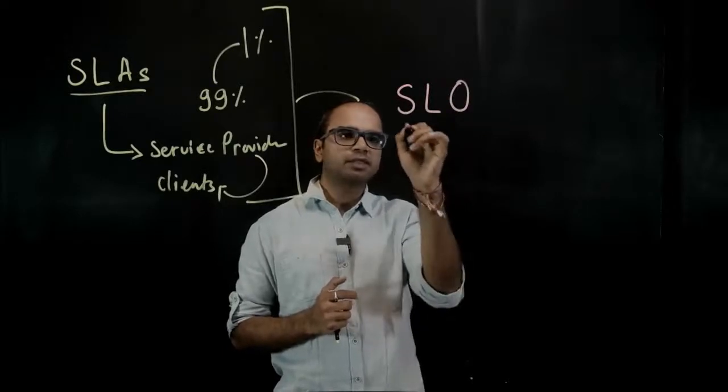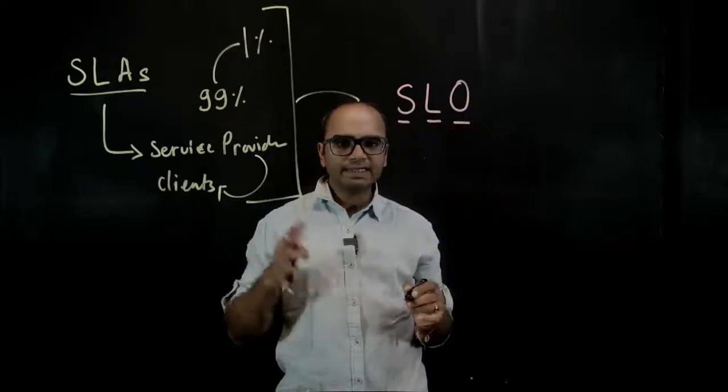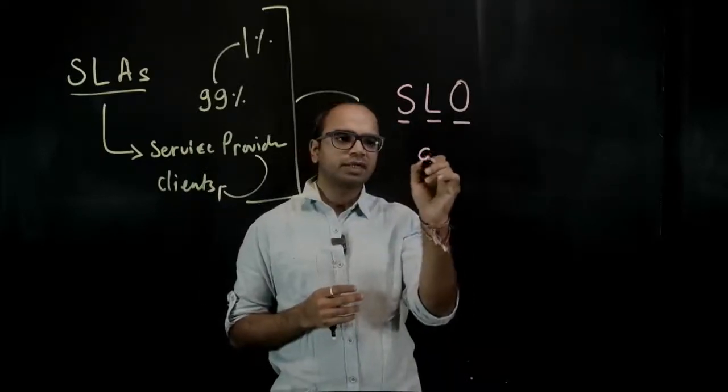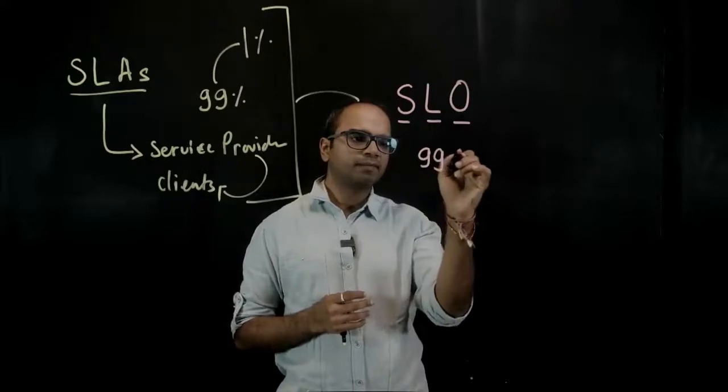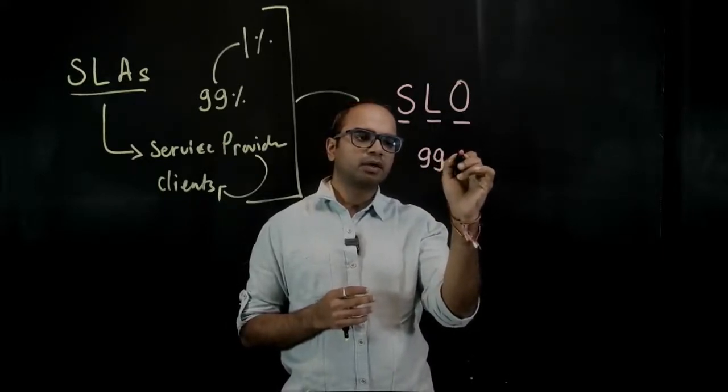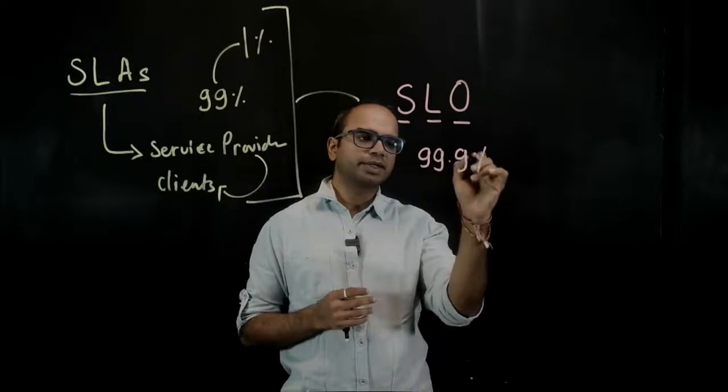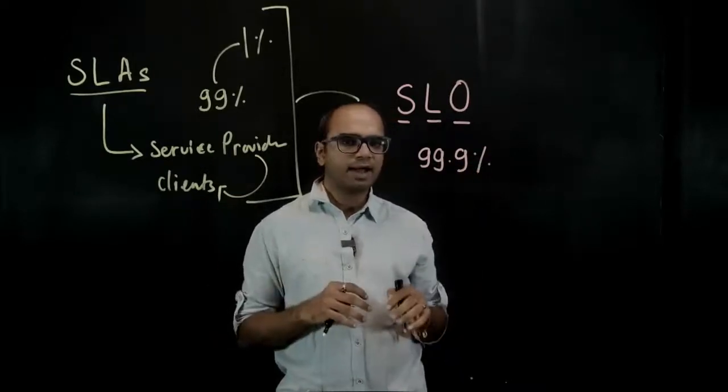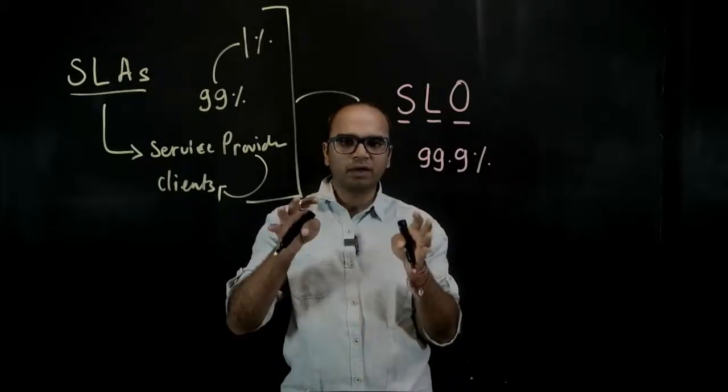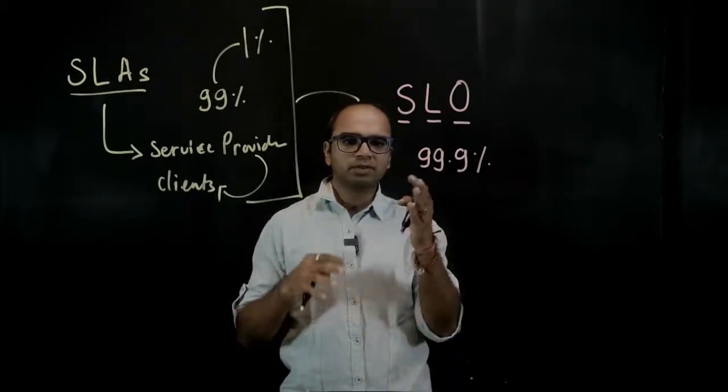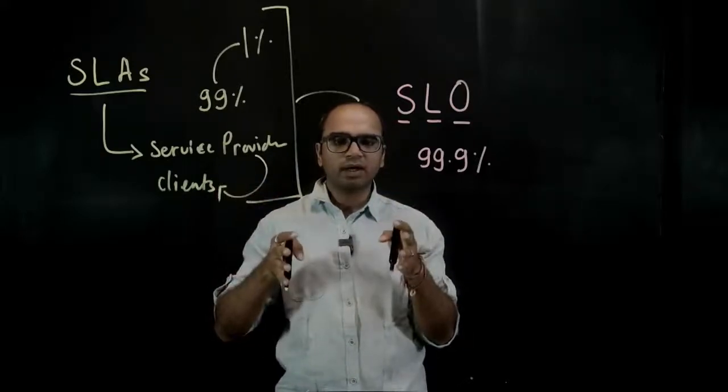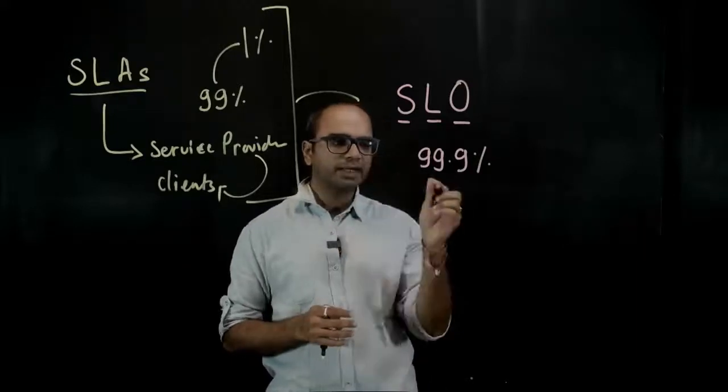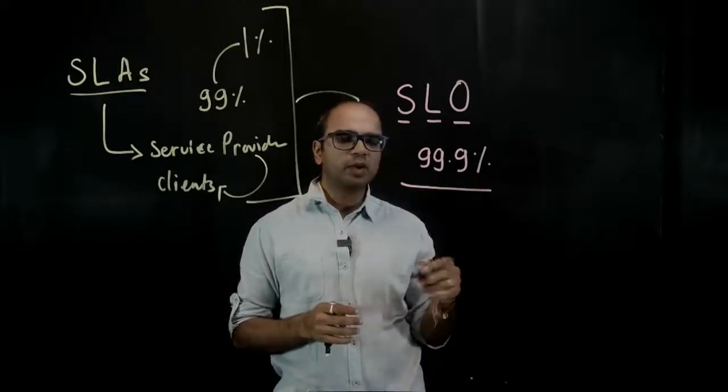SLO stands for service level objective. It is similar to SLAs but it is just more stringent. So instead of say 99%, I would say I want to comply 99.9% or a little higher than that. This way you have some buffer, so even if you don't comply to this, you will ensure that you don't breach this one. You just add some buffer here, so this makes it a little more stricter. This is internally communicated.